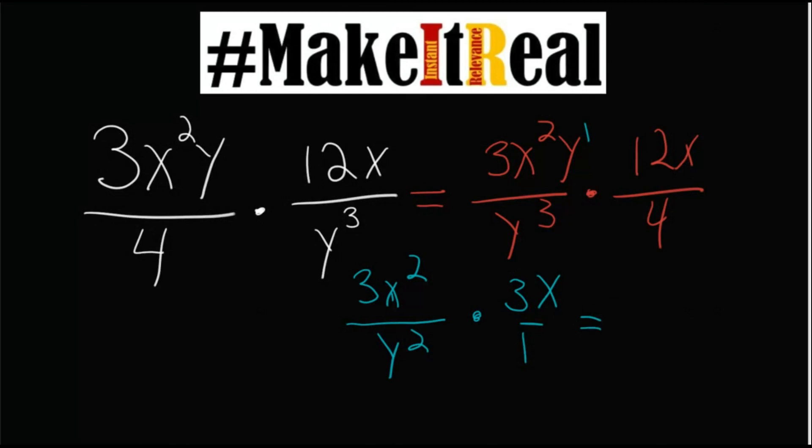They can then finalize that simply by multiplying the same way they've multiplied any fraction: 9x to the third over y squared.